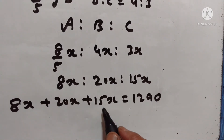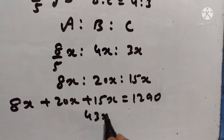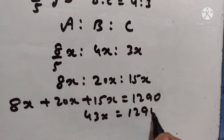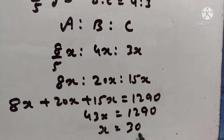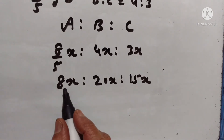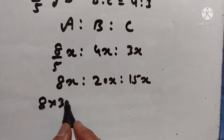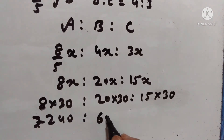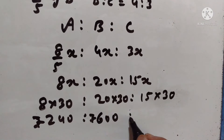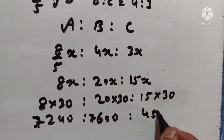28 plus 15 is equal to 43x, which is equal to 1290. So x is equal to 30. Therefore A gets 8 into 30, which is 240 rupees. B gets 600 rupees. And C gets 450 rupees.